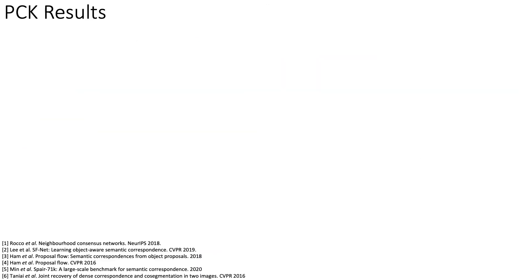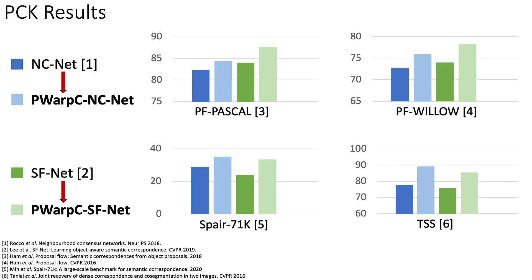We train two networks by replacing the original weakly supervised network losses with our probabilistic warp consistency objective. We evaluate the baseline and our PWarp-C networks on four different benchmarks. On all benchmarks, our approach outperforms the baselines and obtains state-of-the-art results overall.